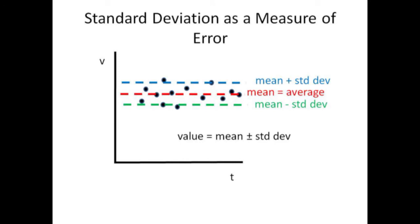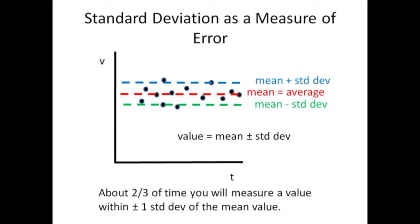The value of the velocity could be considered the mean plus or minus one standard deviation. The laws of statistics suggest that if you measured the velocity at any of those instants of time, you could expect to be within plus or minus one standard deviation of the mean value about two-thirds of the time.